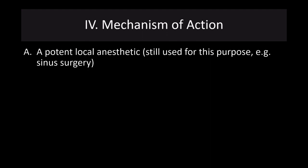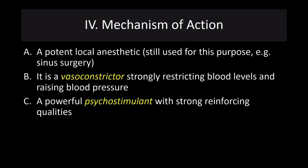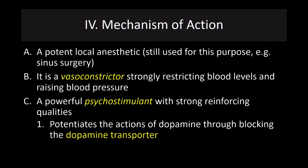Cocaine is a potent local anesthetic, still used medically for that reason — which is why it's Schedule II rather than Schedule I. It's a potent vasoconstrictor, strongly restricting blood vessels and raising blood pressure. It's a powerful psychostimulant with very strong reinforcing qualities. It potentiates the actions of dopamine by blocking the dopamine transporter, preventing reuptake of dopamine into the presynaptic neuron and dramatically increasing dopamine's actions, particularly in the nucleus accumbens. It has some effects on serotonin and norepinephrine, but its primary reinforcing properties are dopaminergic.